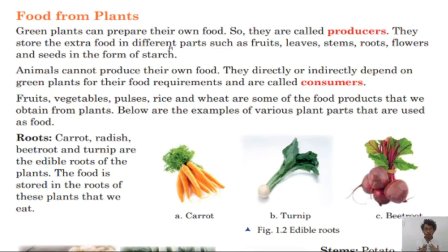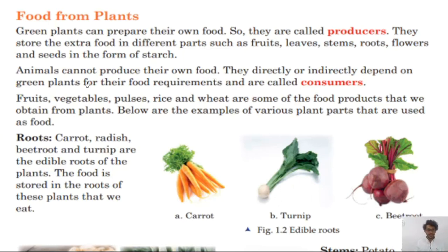Animals cannot produce their own food. We as human beings, and other animals like cats, dogs, and lions, cannot prepare our own food — we eat with our mouths. Plants don't chew food. Therefore, animals depend on plants as a source of food. Animals cannot produce their own food; they directly or indirectly depend on green plants for their food requirements, and are called consumers.